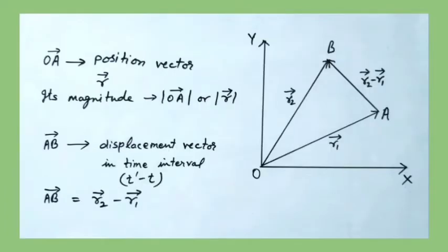Now consider vectors in a plane. Let us consider vector OA with origin O and head A as seen in the diagram. Suppose A is the position of a moving object at any time t in the x-y plane. Then vector OA represents the position vector of the object at time t when it is at A. The position vector gives two pieces of information: it gives the smallest distance of the object from the origin, and it gives the direction of the object with respect to the origin. Position vector OA can also be represented as vector R, and its magnitude can be given as the modulus of vector OA or modulus of vector R, which gives the length of vector OA.